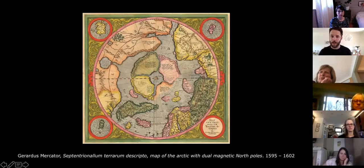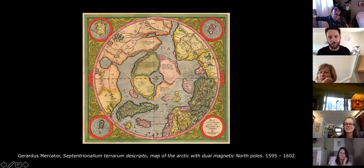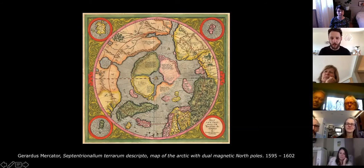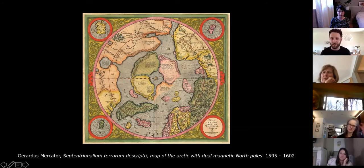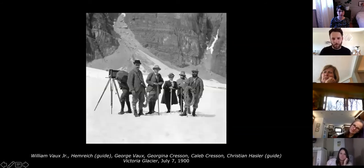Here's an example of how maps can be very fantastical. This is a map from the late 16th to early 17th century by Gerardus Mercator — a map of the North Pole. Mercator imagined the North Pole having dual magnetic poles. In terms of the historical timeline of exploration, this is an imaginary map, a map of an imaginary terrain. This project was also informed not only by my interest in cartography but by the work of one family of photographers from Philadelphia.